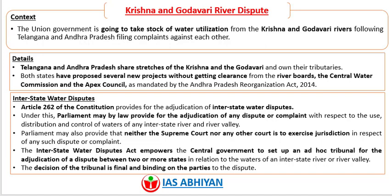Regarding interstate water disputes, Article 262 of the Constitution of India provides for the adjudication of interstate water disputes. Under this, Parliament may by law provide for the adjudication of any dispute or complaint with respect to the use, distribution, and control of waters of any interstate river and river valley. Parliament may also provide that neither the Supreme Court nor any other court shall exercise jurisdiction in respect of any such dispute or complaint.